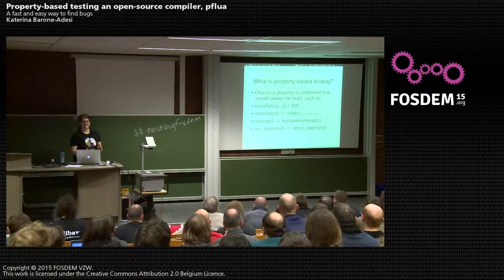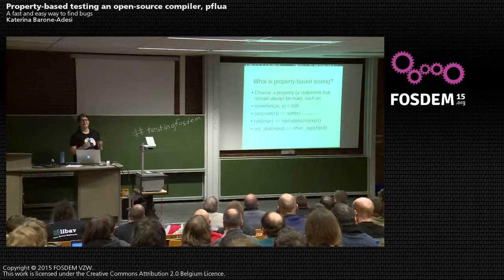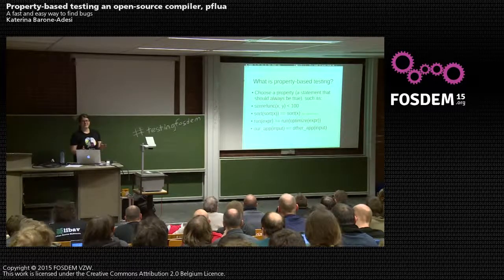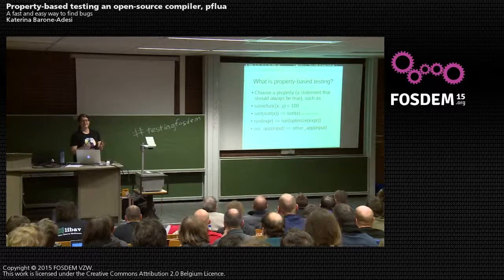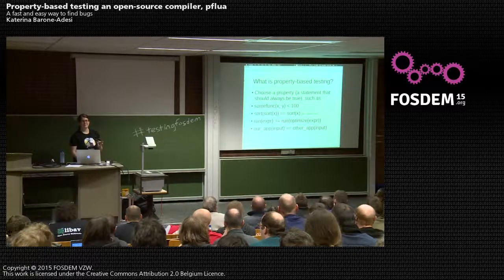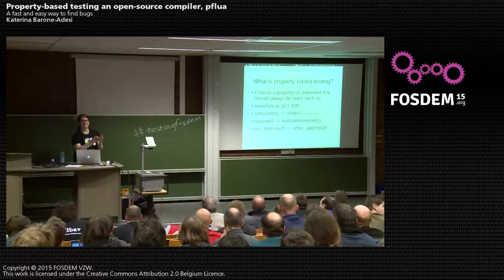So what is property-based testing? The idea is that you have some property, and you want that property to always be true no matter what input you give it. You might have some function that should always have a result less than 100. Or if you've implemented a stable sorting algorithm, sorting the results twice should be the same as sorting it once. Or if you have something you're optimizing, you should get the same result before and after optimization.